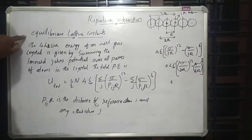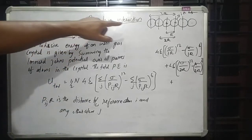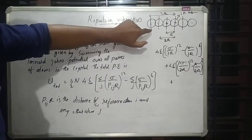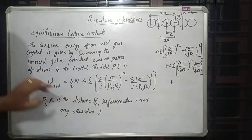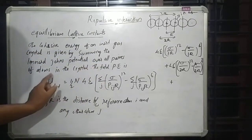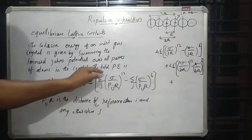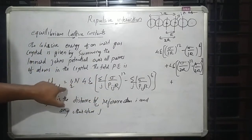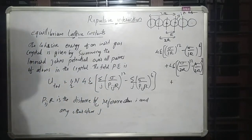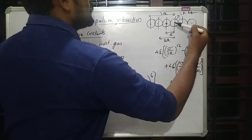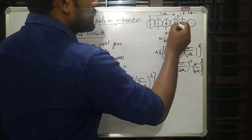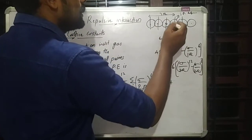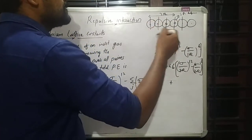Now we need to find out the equilibrium lattice constant — the lattice constant when the atoms are almost at rest or at minimum energy. The cohesive energy of an inert gas crystal is found by summing the Lennard-Jones potential over all atoms. In a one-dimensional array, if the interatomic distance is R, the distance between next atoms is 2R, then 3R, and so on.